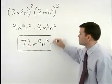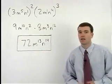So our answer is 72m to the thirteenth n to the fourteenth.